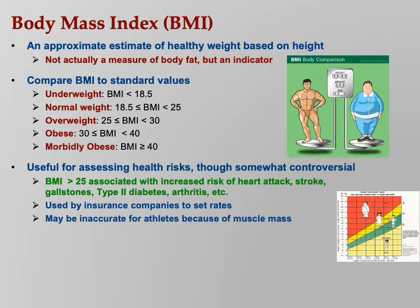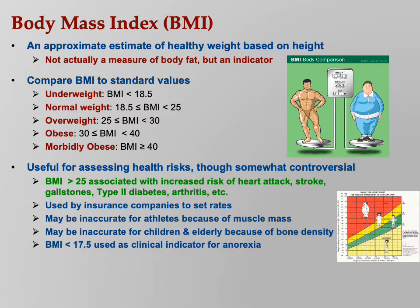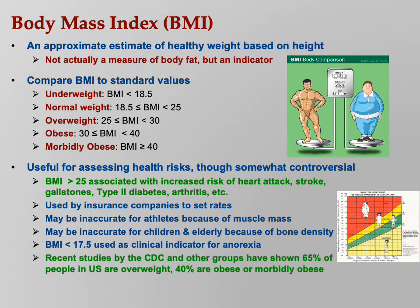BMI can also be inaccurate for children and the elderly because of bone density. Under 17.5 you're officially anorexic. The CDC says that 65 percent of people in the U.S. - two-thirds - are overweight, and 40 percent are obese or morbidly obese. Those poor people in sub-Saharan Africa - their lives might not be very pleasant, but not many of them are overweight. So think about that.